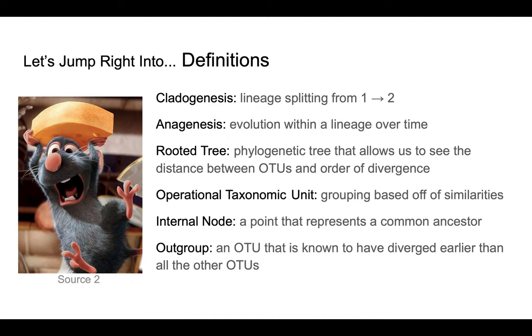Let's jump right into some definitions. Cladogenesis occurs when a lineage splits into two. This is unlike anagenesis. Anagenesis is simply evolution within a lineage over time.